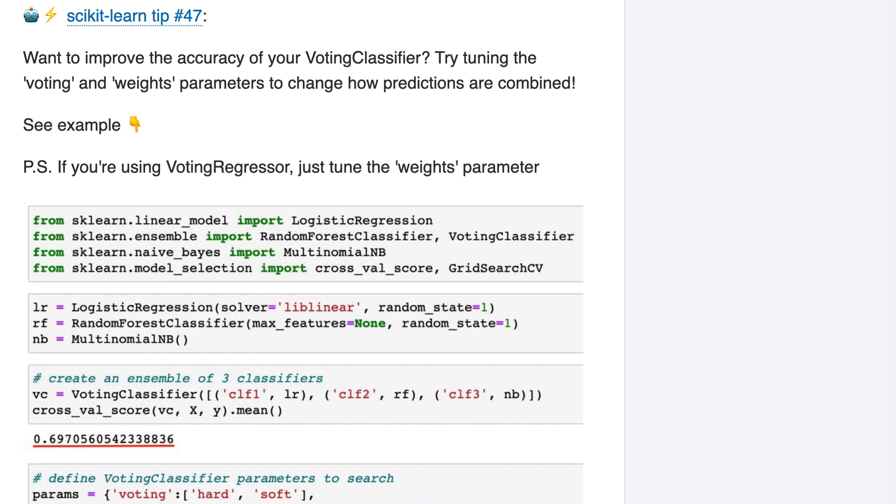Let's start with the setup. We're creating three classifiers, namely logistic regression, random forests, and multinomial naive Bayes. Then we'll ensemble the classifiers using the voting classifier class. When we cross-validate the ensemble, its accuracy is about 70%. Our goal here is to increase the accuracy of the ensemble even further.